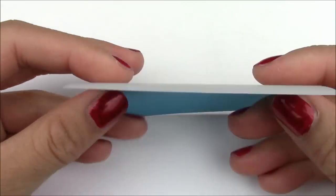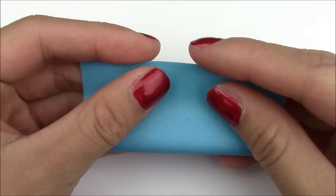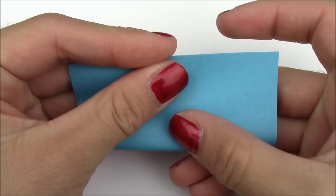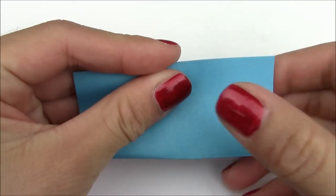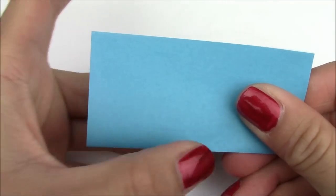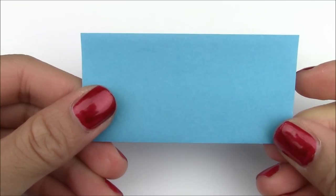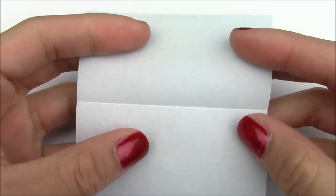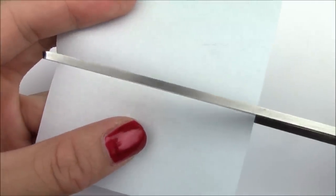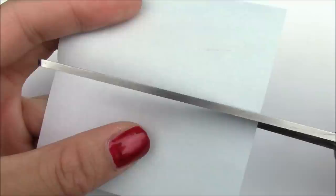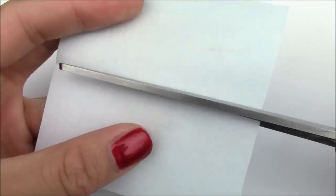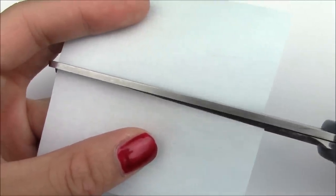So the first thing you want to do is you want to fold the square sheet of paper in half lengthwise like this. Crease it in and unfold. Then you're just going to take a pair of scissors and cut along the center crease that you just created. And basically we're just creating two sheets that have a ratio of 1 to 2.